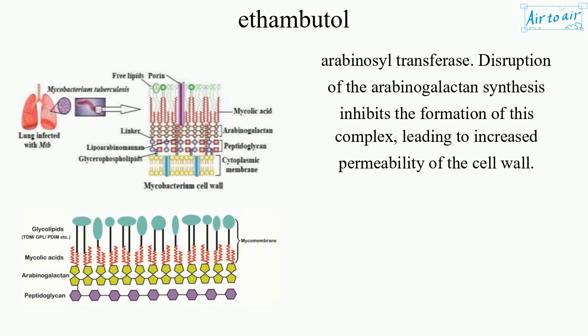Disruption of the arabinogalactan synthesis inhibits the formation of this complex, leading to increased permeability of the cell wall.